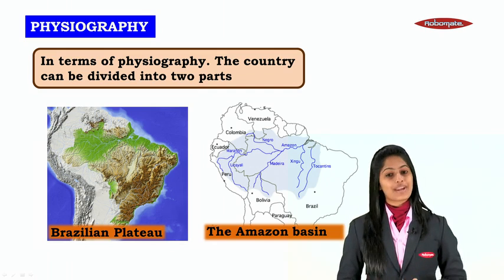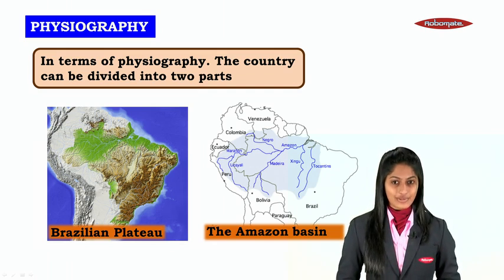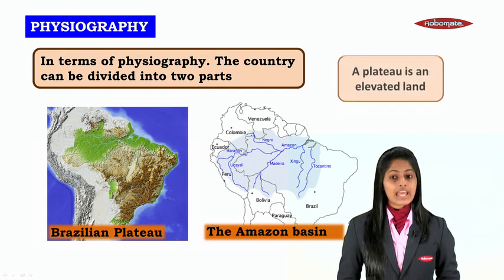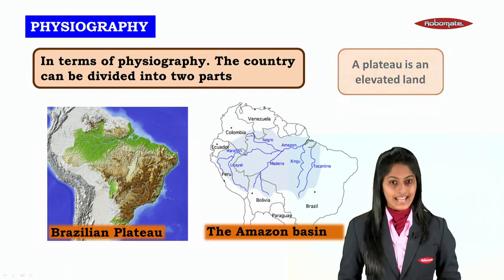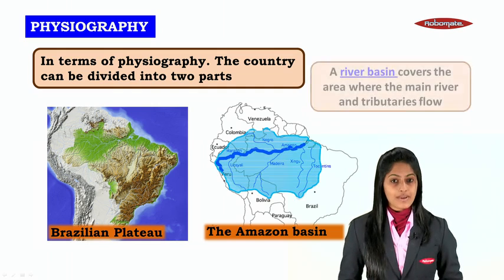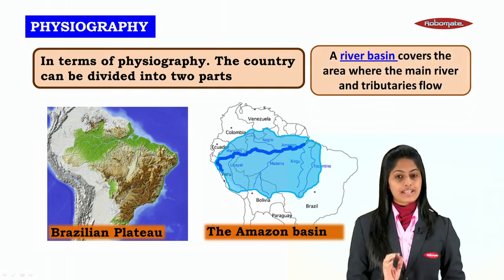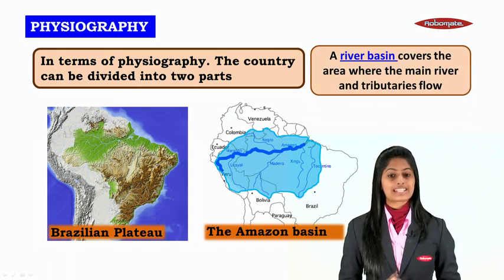Talking about physiography, in terms of physiography the country can be divided into two parts. The very first part is the Brazilian Plateau and the second is the Amazon Basin. The word plateau refers to an elevated land, and a river basin covers the area where the main river and its tributaries flow.